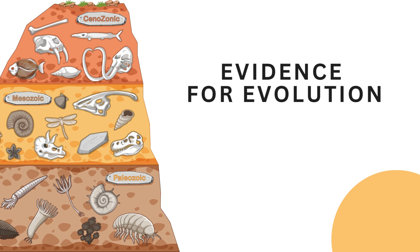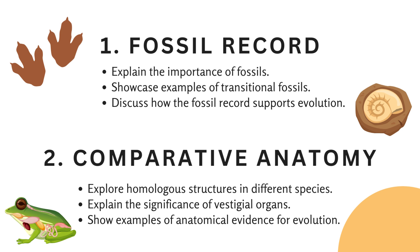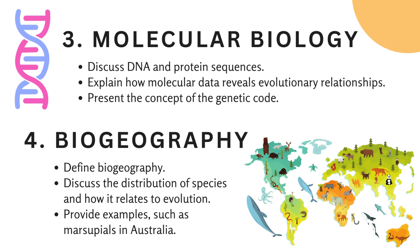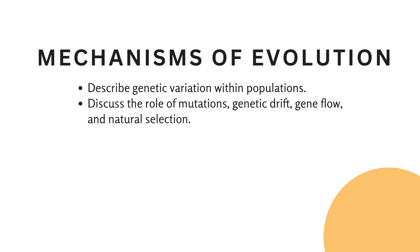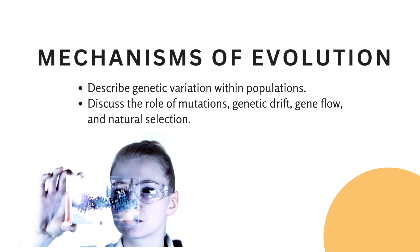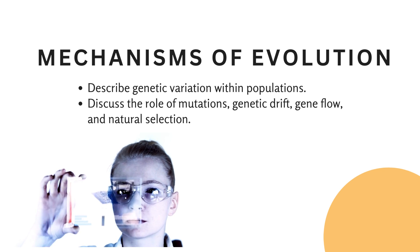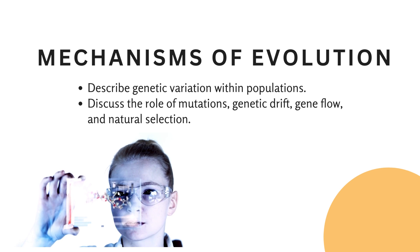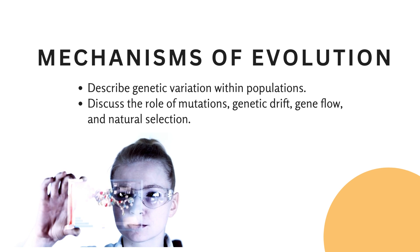Now let's turn to the compelling evidence for evolution, a cornerstone of this theory. The fossil record, comparative anatomy, molecular biology, and biogeography collectively reveal the story of life's transformation over eons. But how does evolution actually happen? Genetic variation within populations, mutations, genetic drift, gene flow, and natural selection are the mechanisms that drive the process.